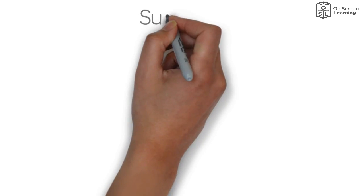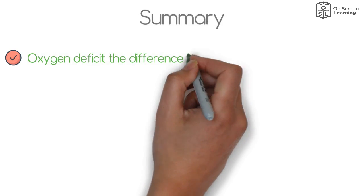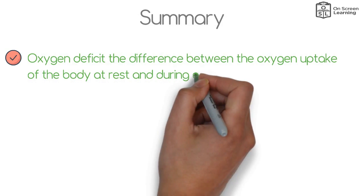Summary: Oxygen deficit - the difference between the oxygen uptake of the body at rest and during exercise.